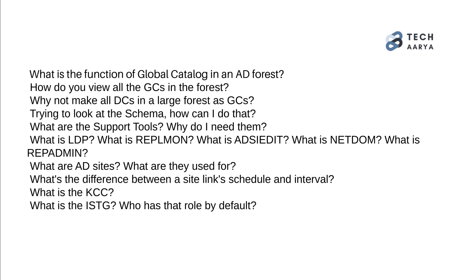81. What is the function of the global catalog in an AD forest? 82. How do you view all the GCs in the forest? 83. Why not make all DCs in a large forest global catalogs? 84. Trying to look at the schema — how can I do that? 85. What are the support tools? Why do I need them? 86. What is LDP? What is Repadmin? What is ADSIEdit? What is NetDom?